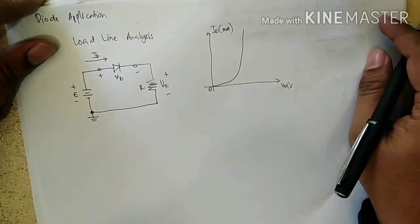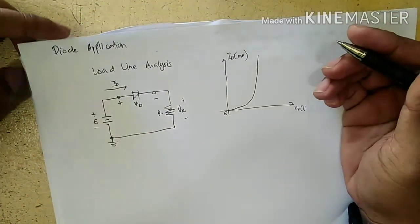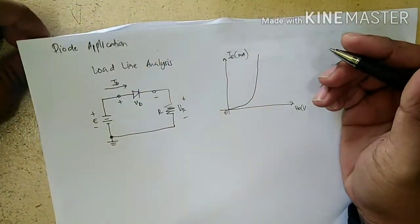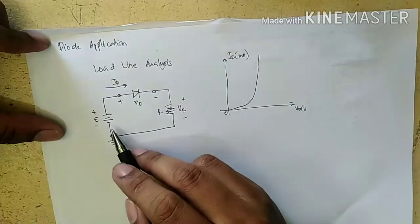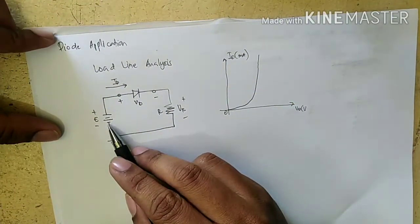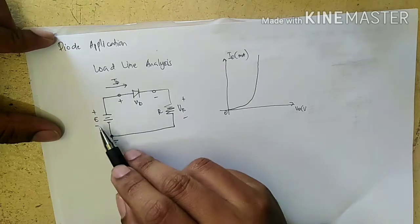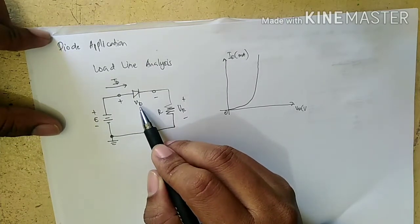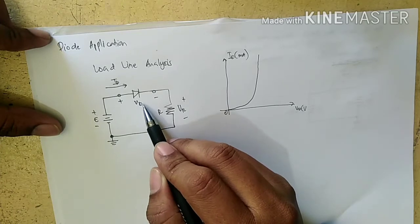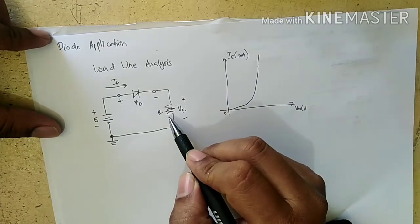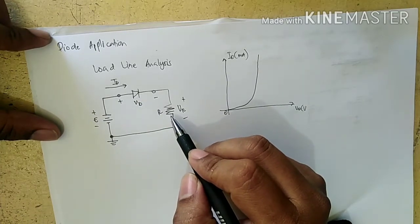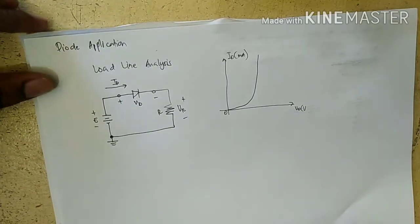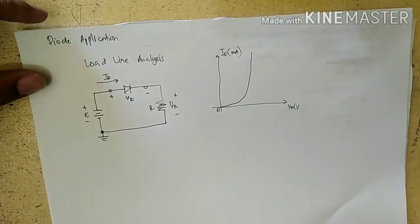Hello, let's discuss the load line analysis of a semiconductor diode. This is the DC supply with polarity plus here and minus here. This is our diode, which has voltage designated as VD, and the resistor. The load line analysis for the diode will determine the operation point of the semiconductor diode.